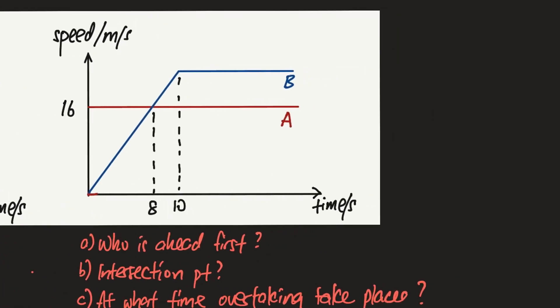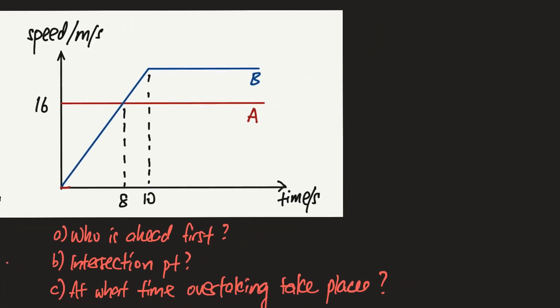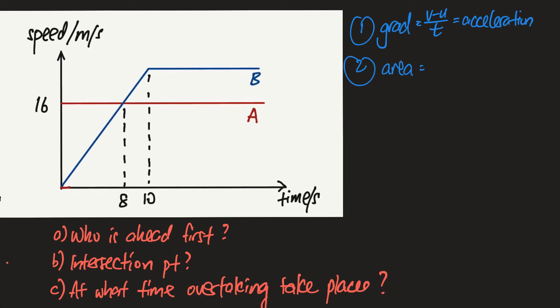Now let's go to the speed-time curve. There are two things you must remember. First, the gradient — rise over run — in this case speed over time, like (v minus u) over t, gives you the acceleration of the object. Second, the area underneath the graph represents the distance traveled by the object.